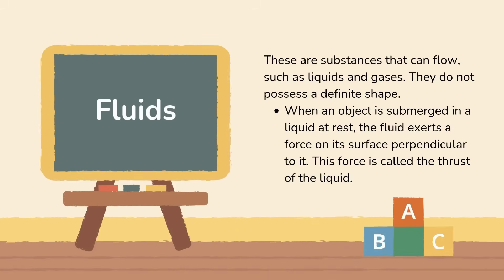What is a fluid? These are substances that can flow, such as liquids and gases. They do not possess a definite shape. When an object is submerged in a liquid at rest, the fluid exerts a force on its surface perpendicular to it. This force is called the thrust of the liquid.